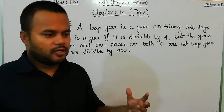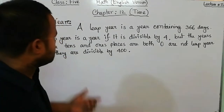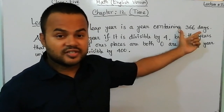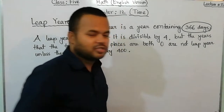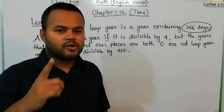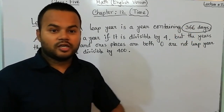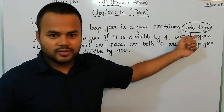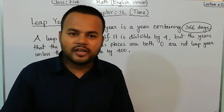Now we will learn about leap year. What is a leap year? A leap year is a year containing 366 days. Every leap year has 366 days. Generally we have 365 days in a year, but in a leap year we have 366 days — one extra day.